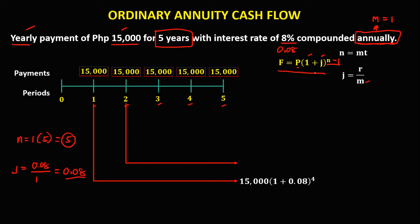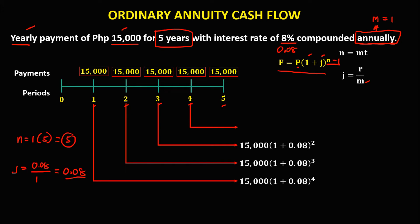For the second year, n minus 2: we have P = 15,000 pesos times (1 + 0.08) to the power of 5 minus 2, which is 3. For the third year, n minus 3: we have P = 15,000 pesos times (1 + 0.08) to the power of 2. For the fourth year, n minus 4: we have 15,000 pesos times (1 + 0.08) to the power of 1.